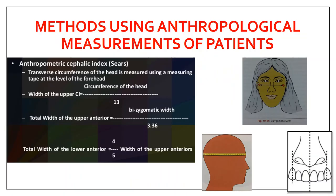The next are methods using anthropological measurements. Certain authors have done studies from ancestors and derived formulas. You take measurements and substitute them in the formula to get the size of the anterior teeth. The first is the anthropometric cephalic index, given by Shears. You measure the circumference of the head with a measuring tape at the level of the forehead, then substitute in the formula: width of upper central incisor = circumference of head ÷ 13.